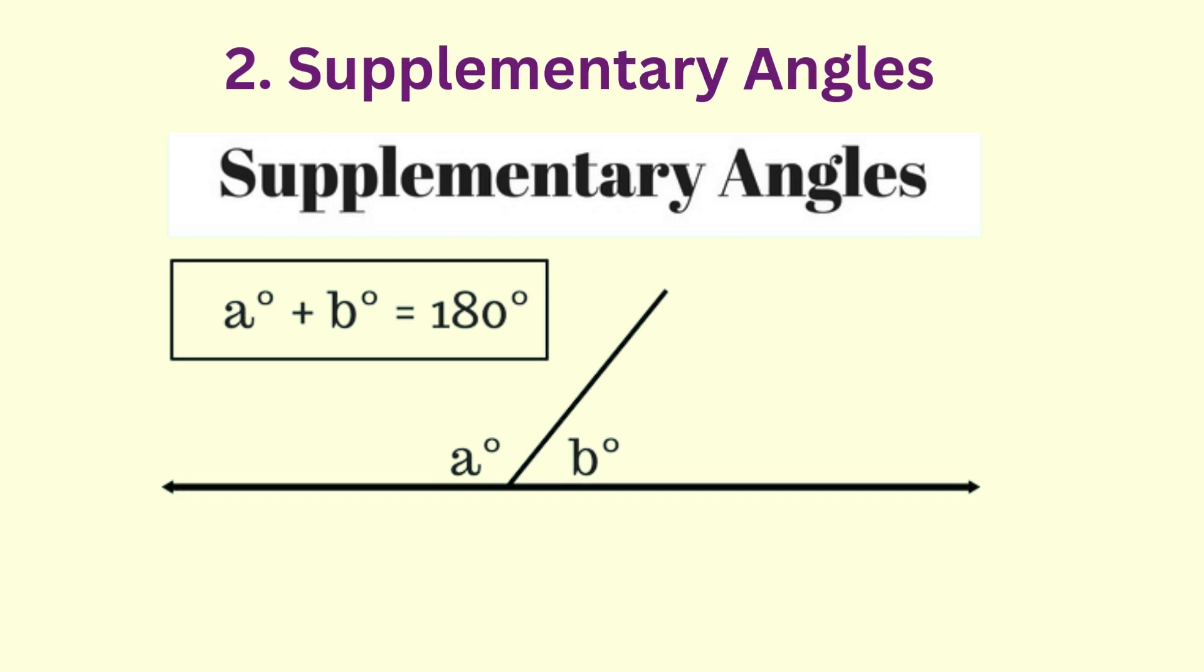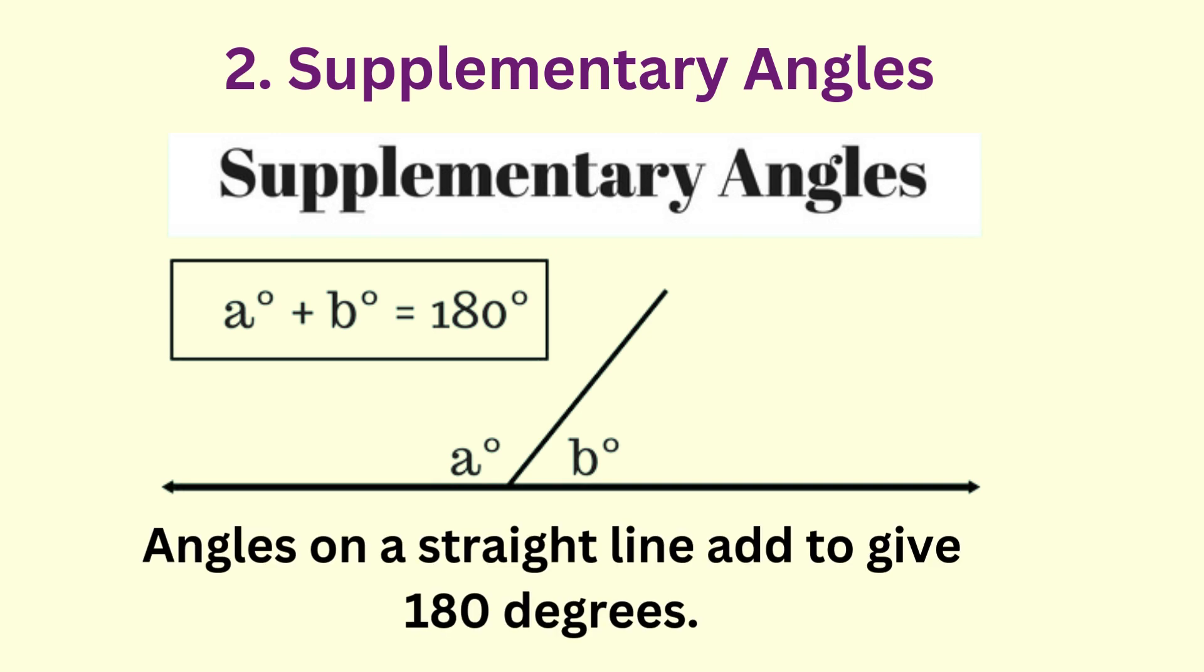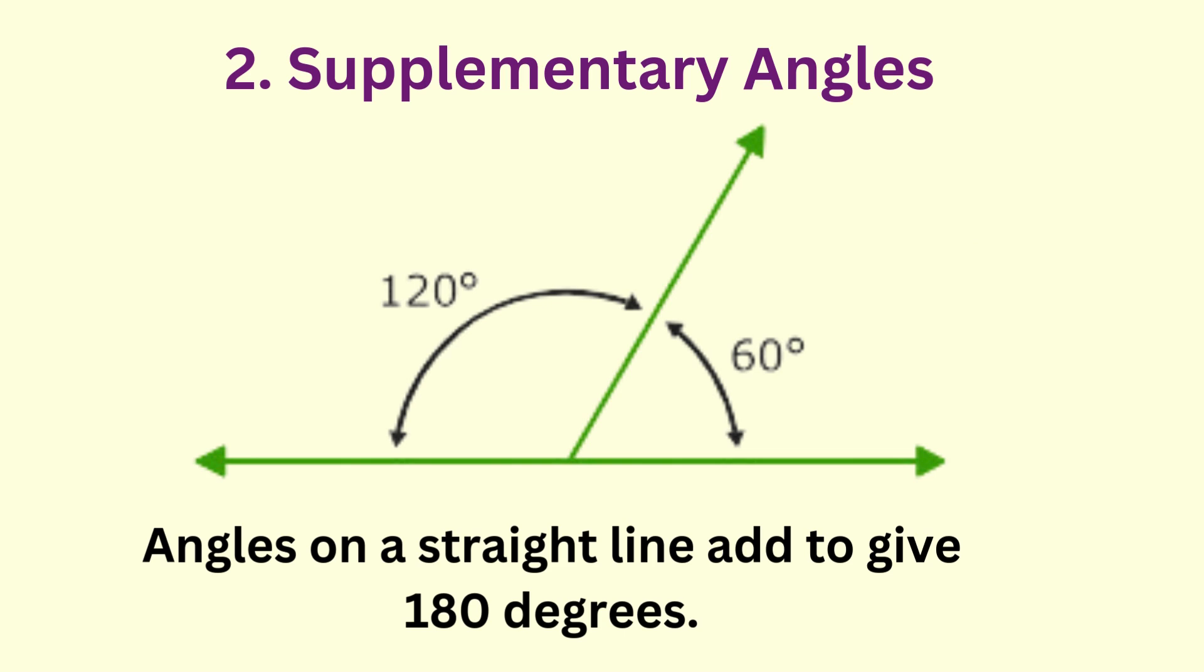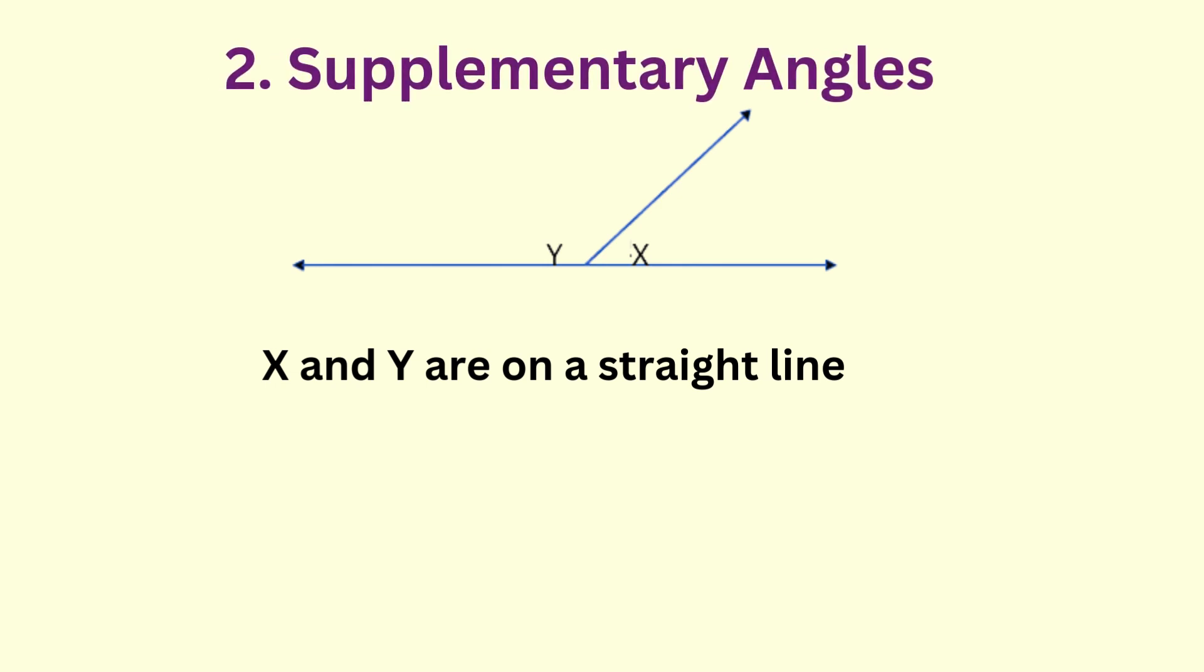Supplementary angles are those angles that sum up to 180 degrees. Angles on a straight line are supplementary angles. For example, angle 120 degrees and angle 60 degrees. In the diagram below, angles x and y are supplementary angles since they lie on a straight line.